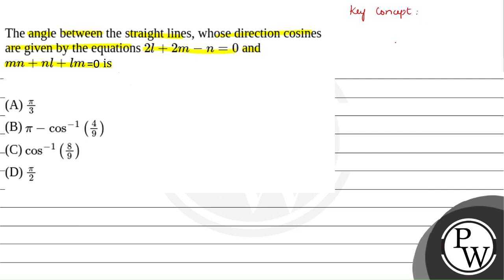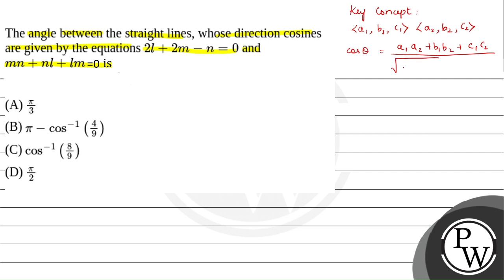The key concept for this question is: if there are two direction ratios A1, B1, C1 and A2, B2, C2, then the angle between them is given by cos theta equals (A1·A2 + B1·B2 + C1·C2) divided by the square root of (A1² + B1² + C1²) into the square root of (A2² + B2² + C2²).